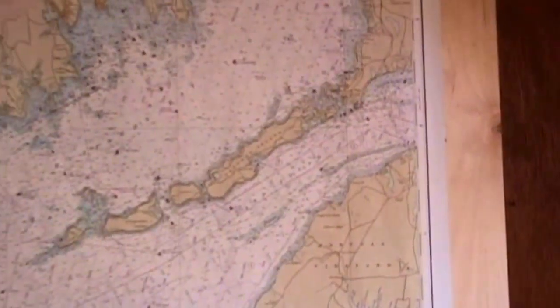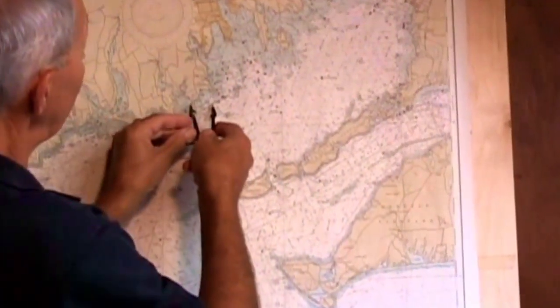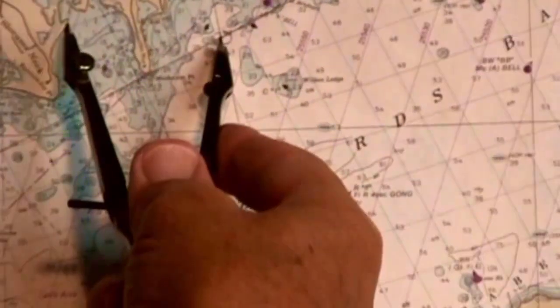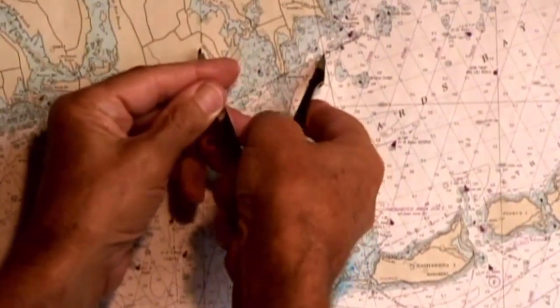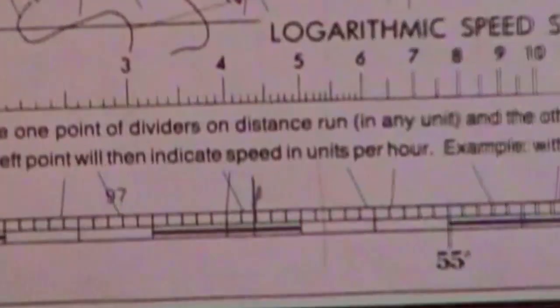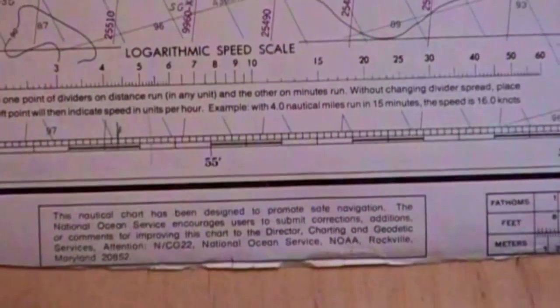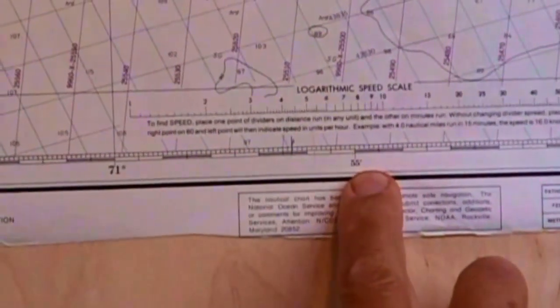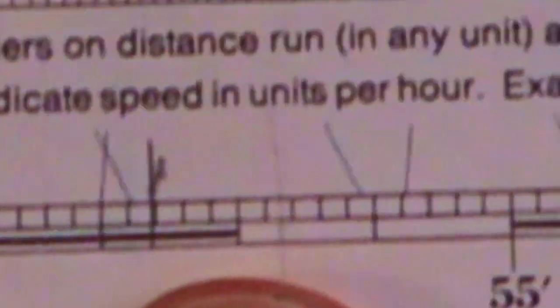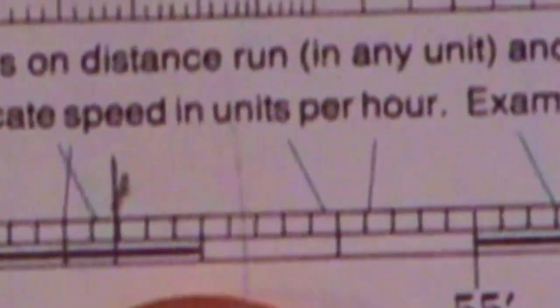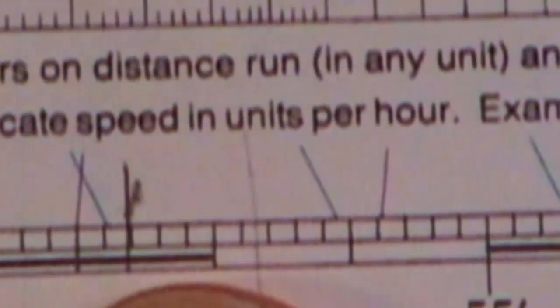Then I do the same thing on longitude. I take the point, put it on the fix, and turn my thumb screw until I get to this vertical line here — it could be any vertical line that's close by, but I'm using this one here. I take my dividers on this line and read it: I have 70 degrees, 40 minutes, 45, 50, 55, and then here's 56. So this is 70 degrees, 56 point roughly 3 minutes west. And that's our answer on longitude — that's our position by that method.